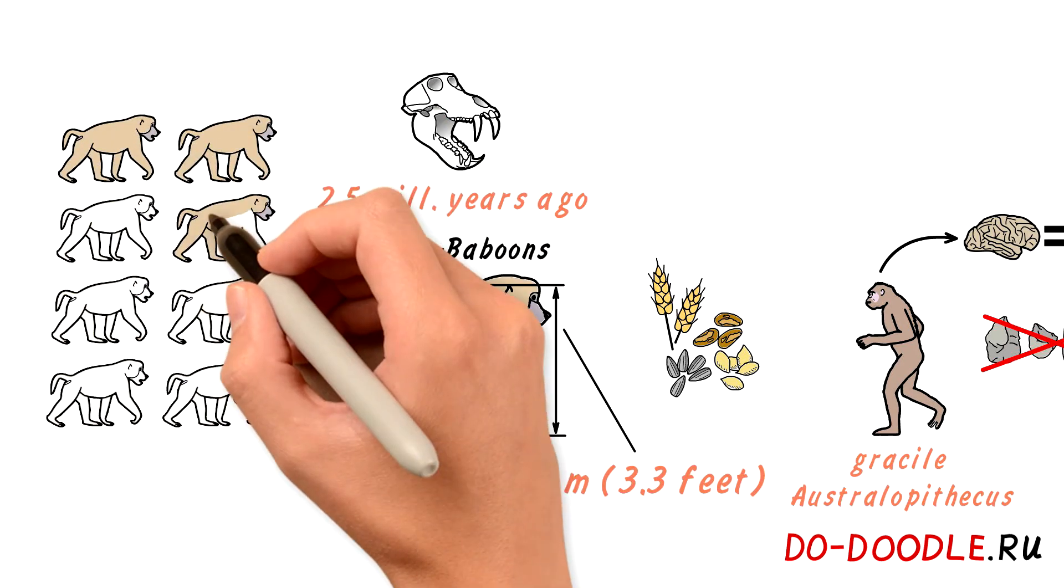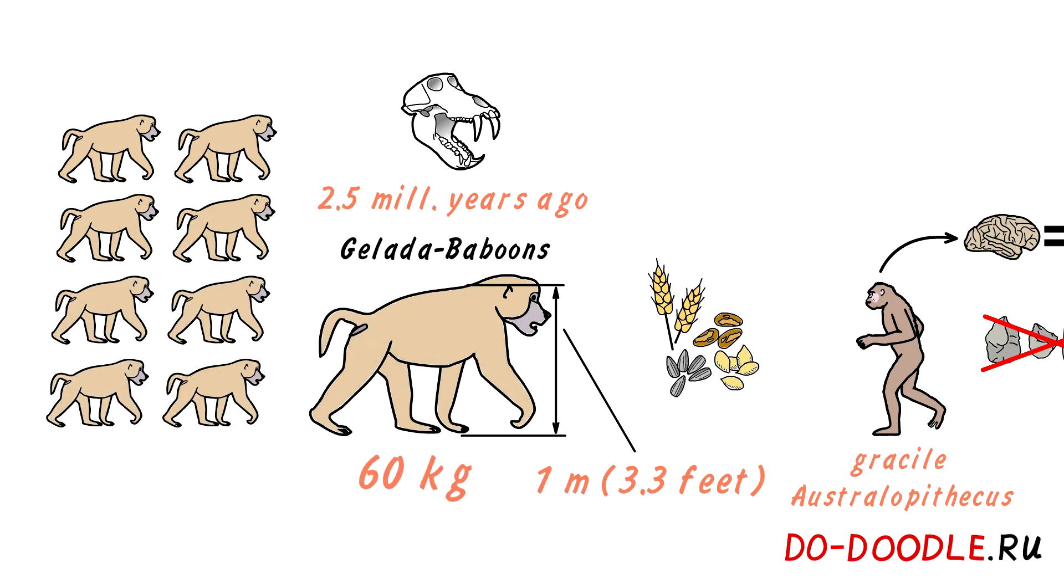To make things worse, their diet was identical to gracile australopithecus. Both ate grain and seeds in the bush.